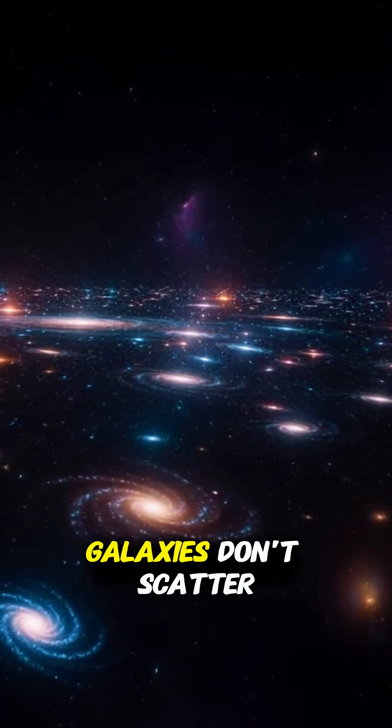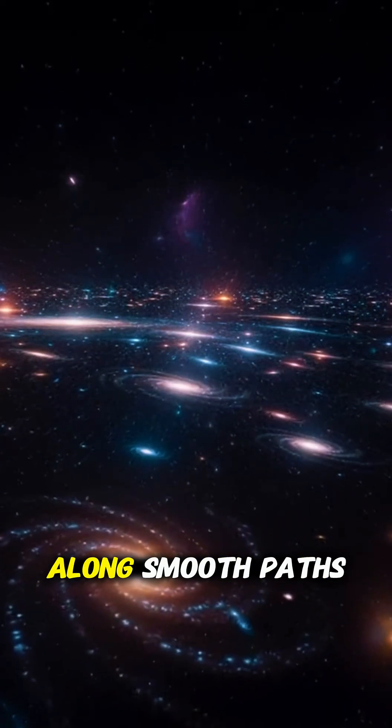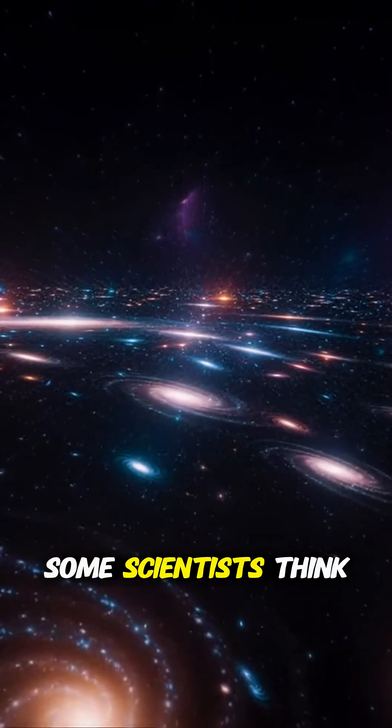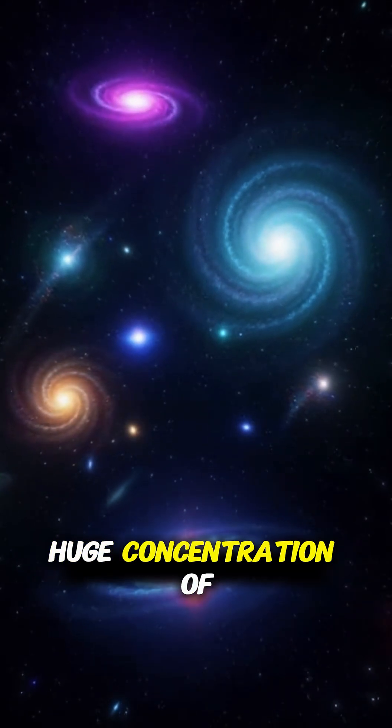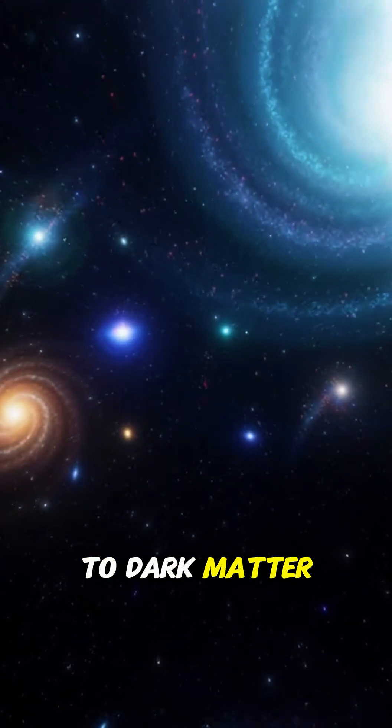In that direction, galaxies don't scatter randomly. They drift together along smooth paths across space. Some scientists think the pull comes from a huge concentration of galaxies, while others point to dark matter shaping the motion.